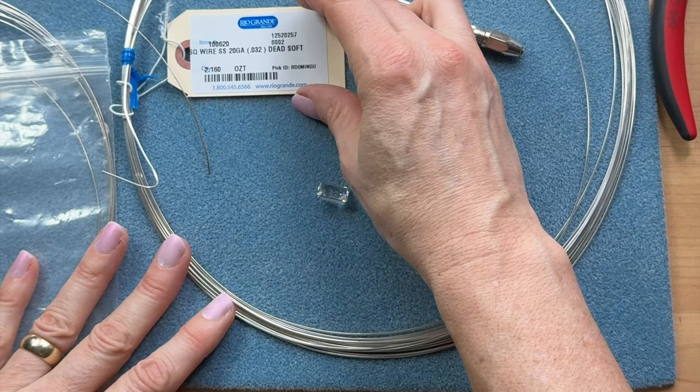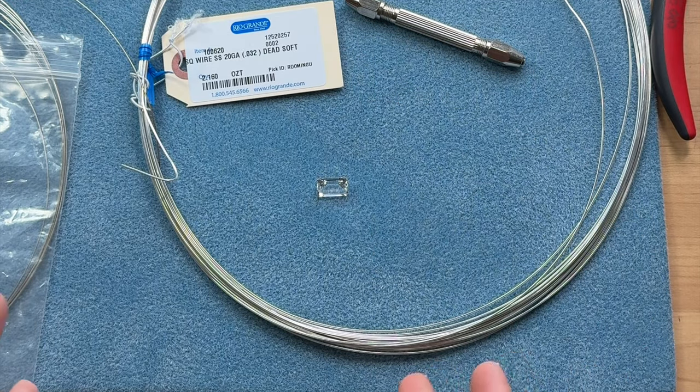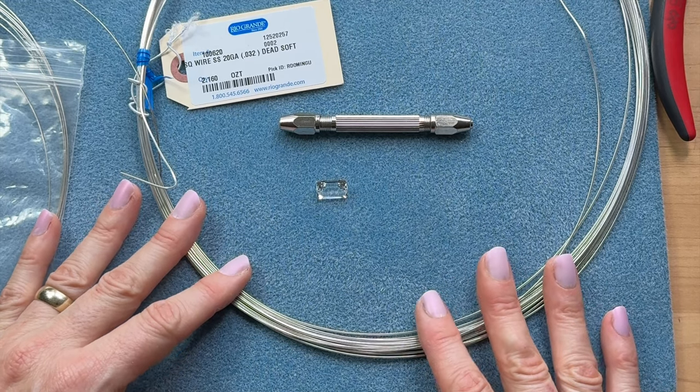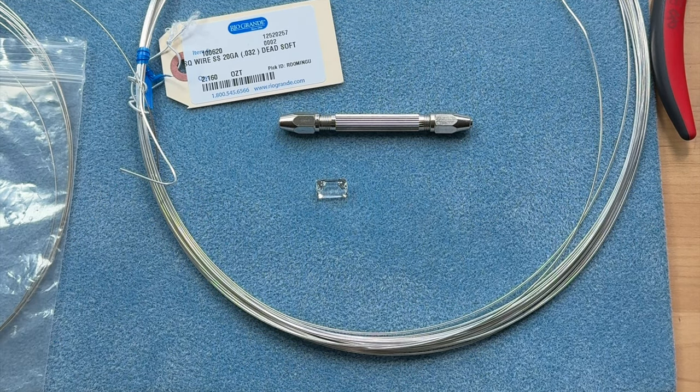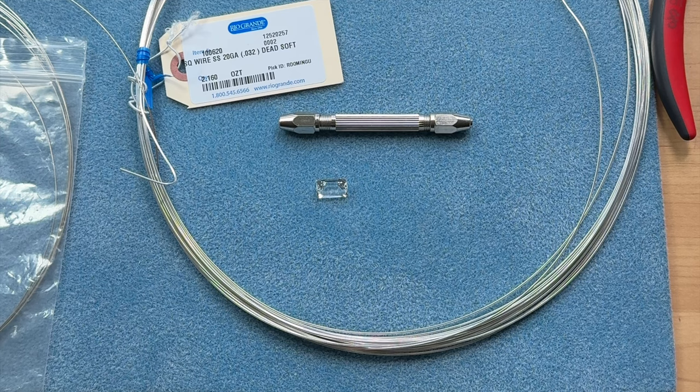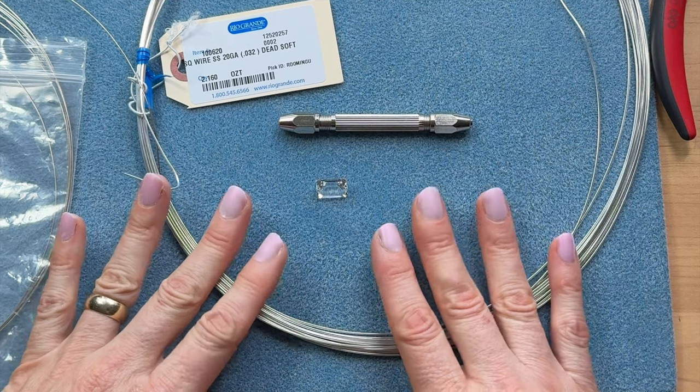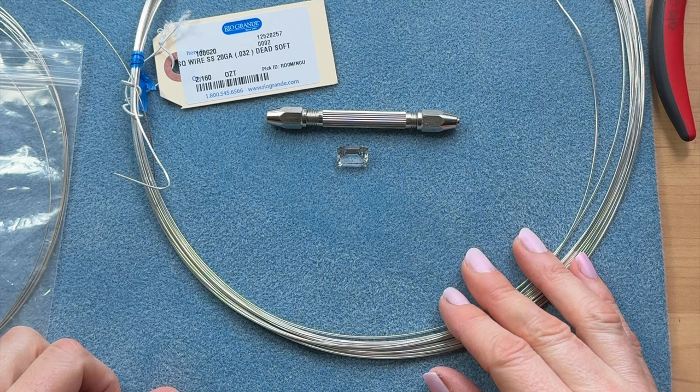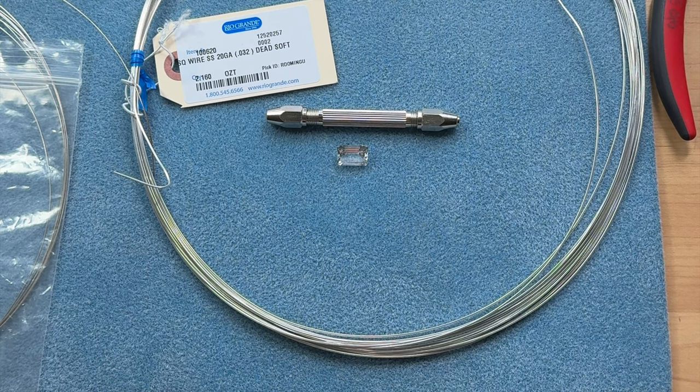I decided on 20 gauge square and 20 gauge half round. I'm going to use an old school type of prong design and this is in memory of our friend Bill Zima. He was a wire wrapper, a stone cutter, and he was one of the founding members of our local rock and mineral society. And he passed away recently. So I wanted to make this video in tribute to his style of wire wrapping. I learned a lot from him over the years. So I wanted to pass his style along to you guys.